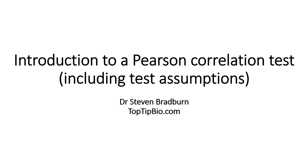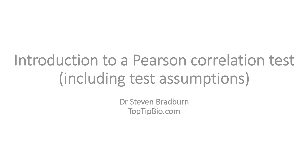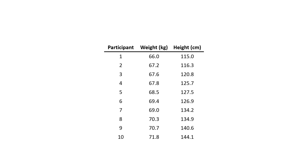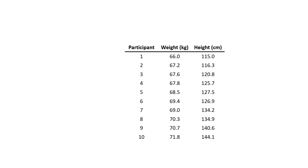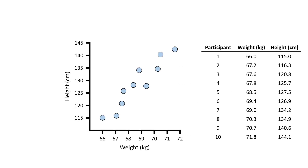So suppose I have measured two continuous variables — weight and height — in 10 different people. If I plot the data on a scatter graph so that the weight data is on the x-axis and the height data is on the y-axis, it will look something like this. Each point on the graph represents a single person's paired measurement of weight and height.